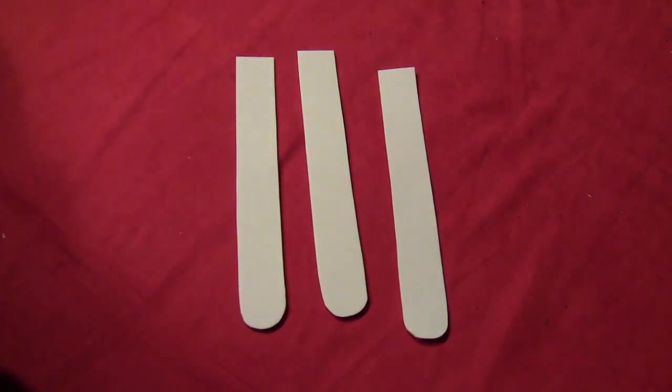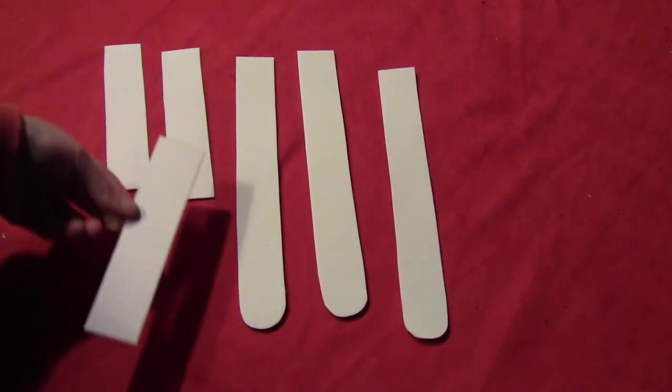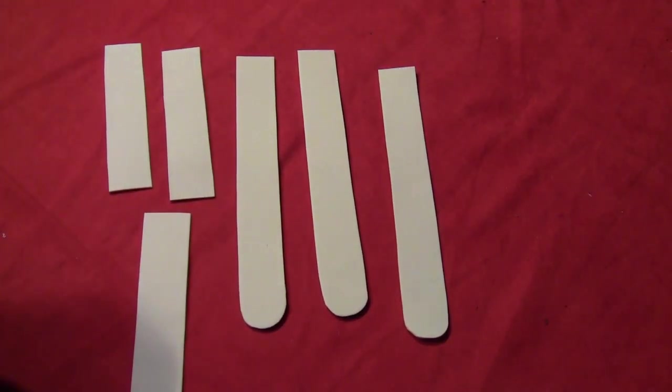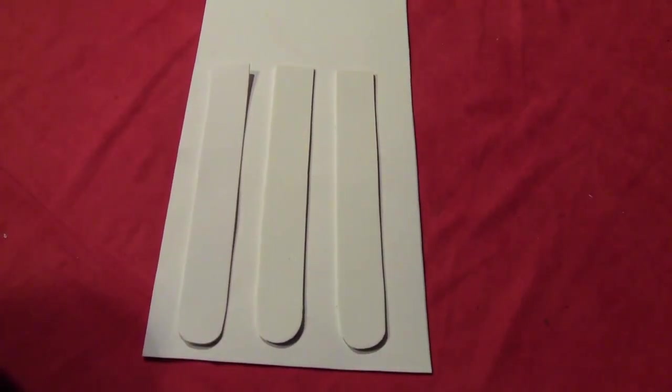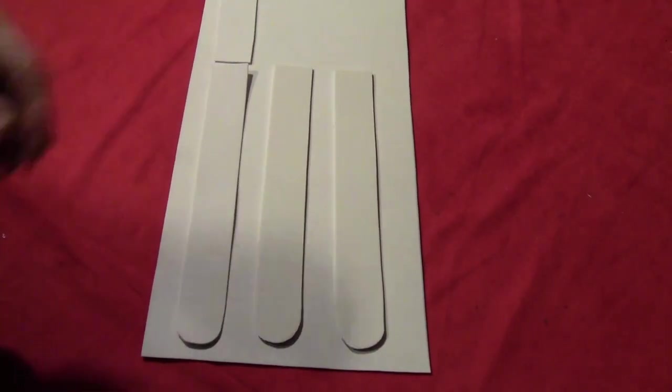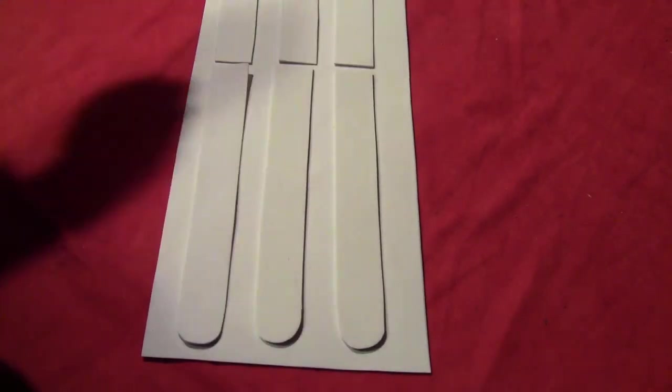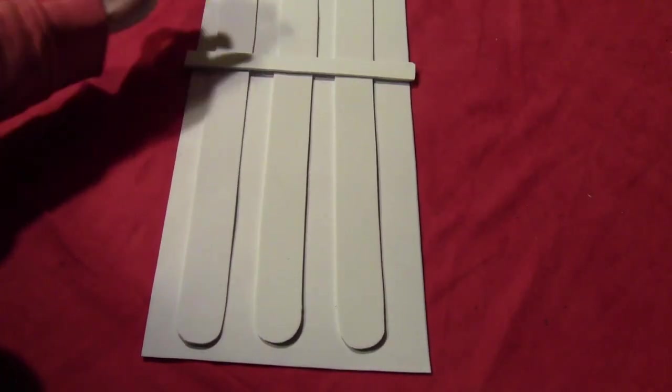Cut some really long thin rectangles with rounded edges, and some half-size rectangles. You don't need rounded edges on those three. I just did these because my foam wasn't long enough. Put a piece over the middle.